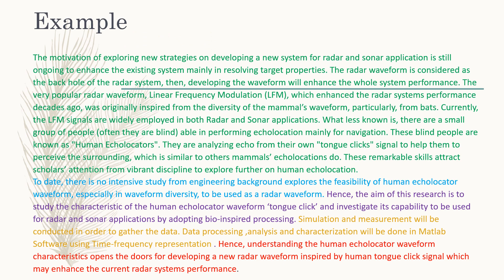For example, here is a sample abstract. The green section discusses the research background and problem. The following section states the gap of the research. The purple section shows the research objective. The orange part describes the methodology used to achieve the objective. And lastly, the abstract shows the contributions or significance of the research towards the body of knowledge.